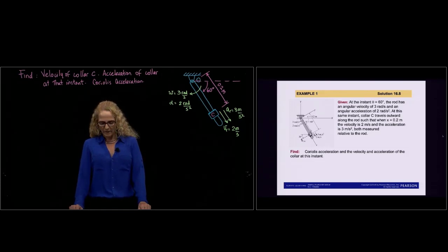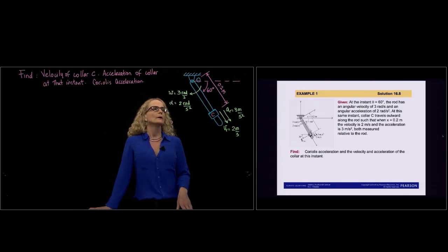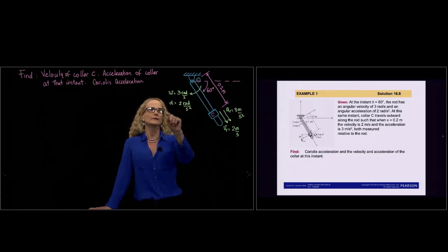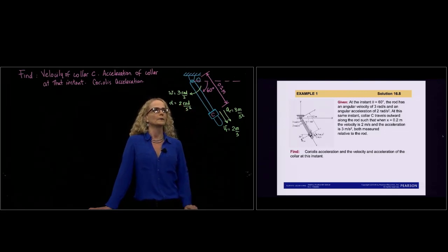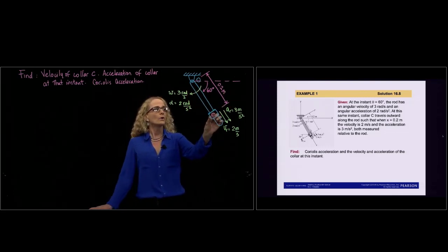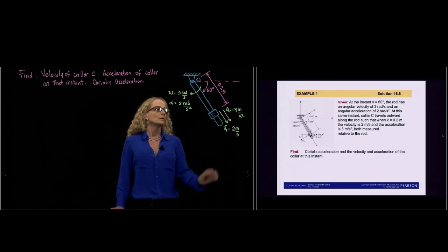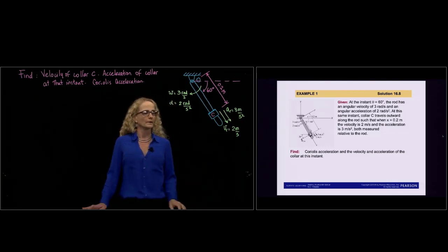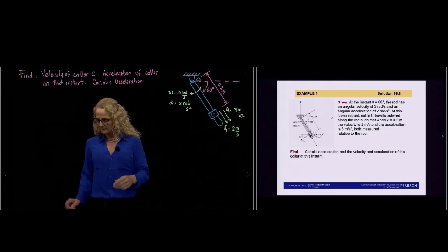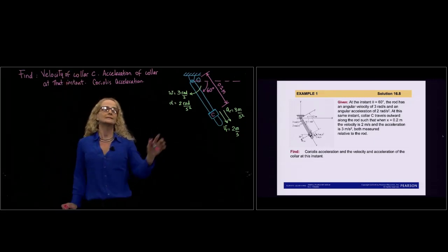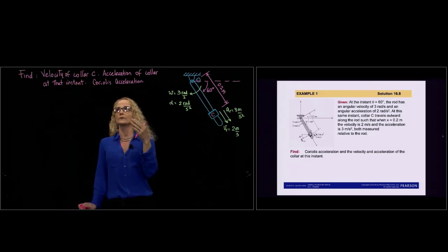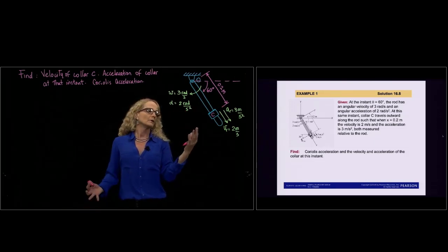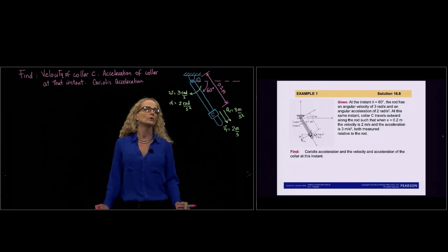In this problem we have a rod that at the instance shown is moving with an angular velocity of 3 radians per second and an angular acceleration of 2 radians per second squared. It's at 60 degrees from the horizontal and there is a coil moving along the rod with a relative velocity of 2 meters per second and a relative acceleration of 3 meters per second squared. We are asked to find the velocity and acceleration of the coil C, and to identify which term is the Coriolis acceleration.